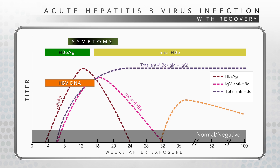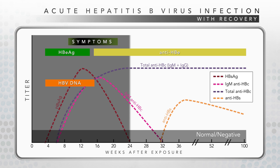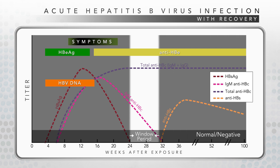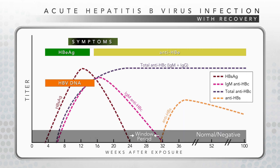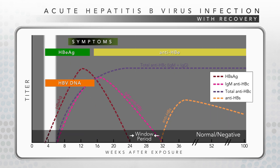Antibody to hepatitis B surface antigen, referred to as anti-HBs, is depicted by the orange hatch line. Anti-HBs becomes detectable during convalescence and after the disappearance of HBsAg, and generally indicates recovery and immunity from reinfection. There is a period of time, often called the window period, which occurs after the disappearance of HBsAg and before the appearance of anti-HBs. During this window period, when using routine tests, IgM anti-HBc and total anti-HBc may be the only serologic markers present. There is also a period soon after exposure when routine tests will find only HBsAg present.